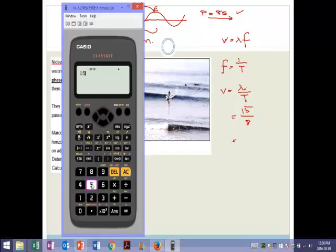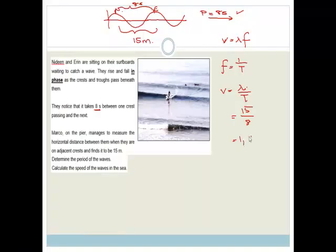And we go 15 divided by 8 equals 1.875. So it's 1.875. When we round it off to two decimal places, it's 1.88 meters per second.